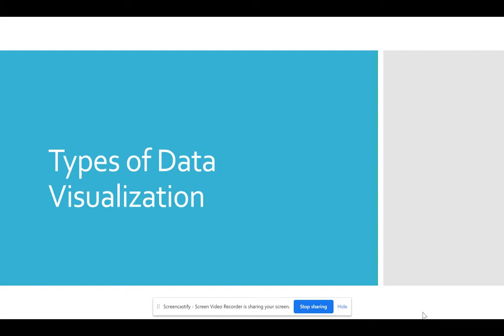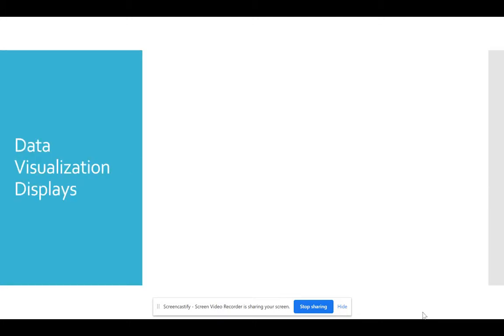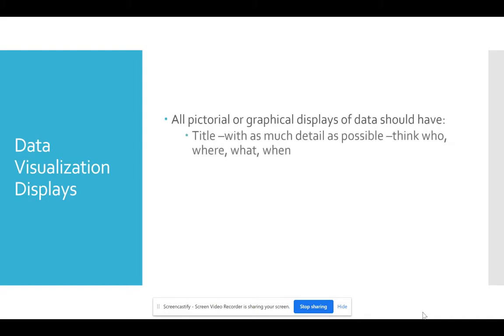Now, regardless of the type of data visualization display that you use, all pictorial or graphical displays of data should have a title. And the title, you want to give it as much detail as possible. Think about who, where, what, when. Someone should be able to look at the graph with no prior knowledge and know exactly what information is being displayed. So you want your title to be as detailed as much as possible.